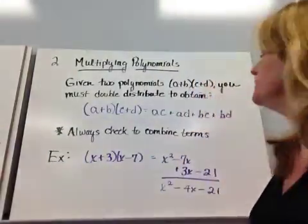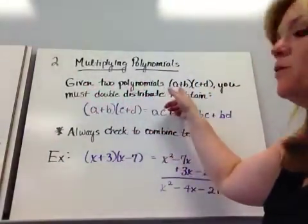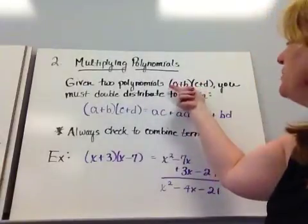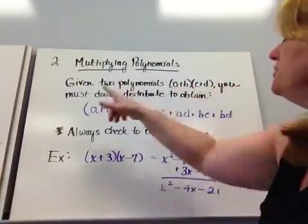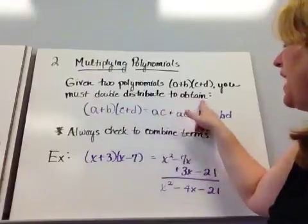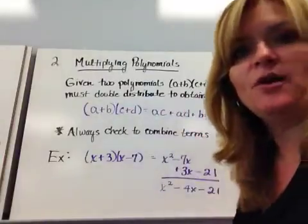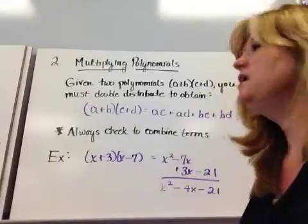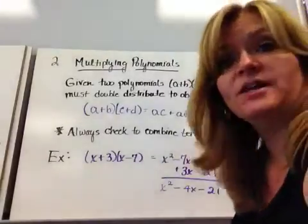Multiplying polynomials. Given two polynomials in this form with two parentheses, (a plus b) times (c plus d), you must double distribute to obtain. When I mean double distribute, I mean doing the distributive property more than once. Actually, you end up doing it four times.